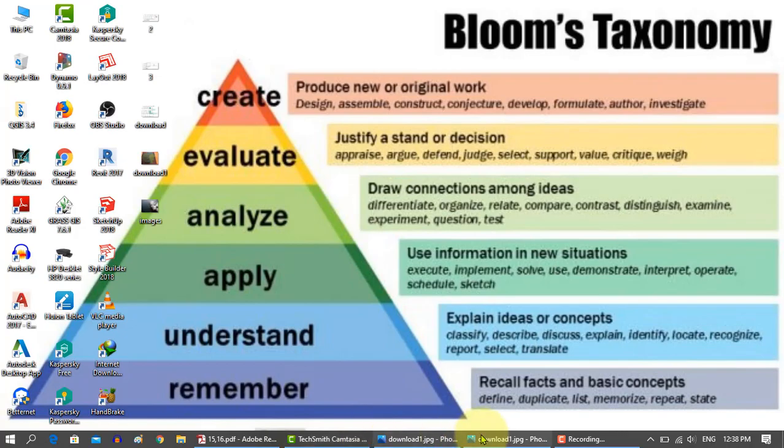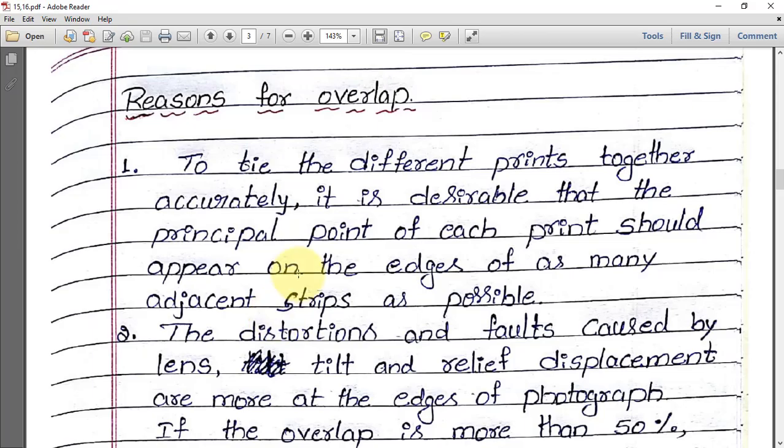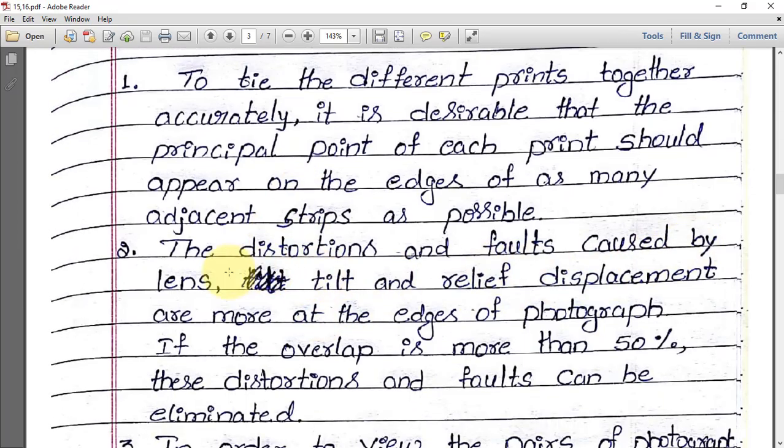The second point is that distortions and faults caused by lens tilt and relief displacement are more at the edges of the photograph. These errors are much greater at the edges. If the overlap is more than 50%, these distortions and faults can be eliminated.